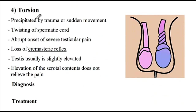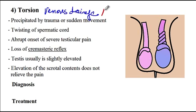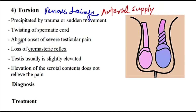The next condition is testicular torsion, which can be caused by congenital anatomic abnormalities, trauma, or sudden movement where there is twisting of the spermatic cord. As a consequence, there would be a problem with venous drainage as well as arterial supply, so arteries can no longer supply the testicles and venous blood cannot exit. Clinical presentations include abrupt, sudden, severe testicular pain that is constant and usually associated with nausea and vomiting.